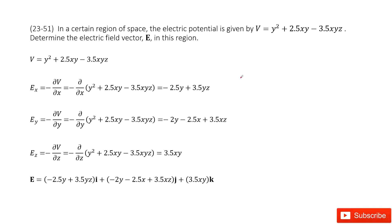There you can see the electric potential function is given. Its independent variables are x, y, and z. We know electric potential is a scalar. Now from the electric potential, we need to determine the electric field. The electric field is a vector E.